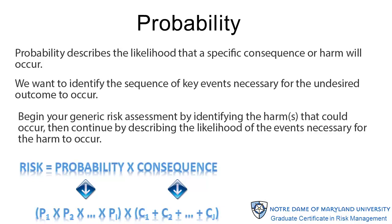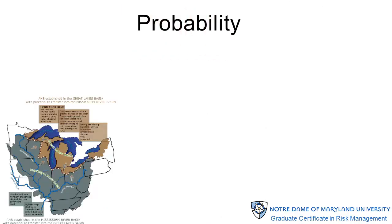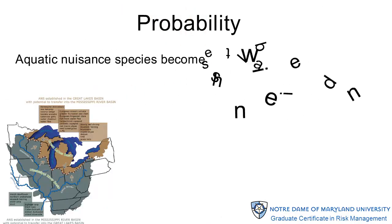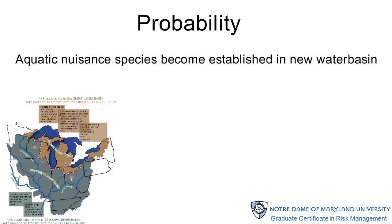What is hopefully clear, however, is the fact that it is impossible to identify the probability elements until after the consequence elements have been identified. You already have some knowledge of the aquatic nuisance species risk. In this case, a single sequence of events can lead to all of the consequences.